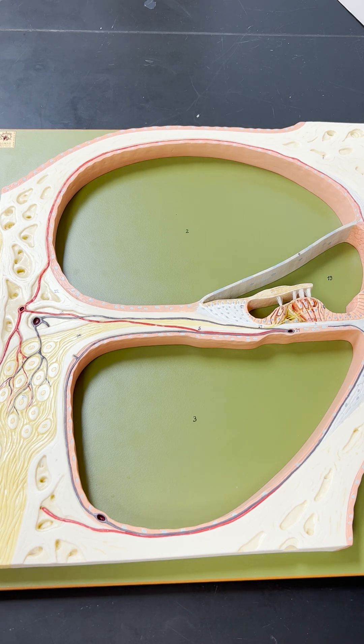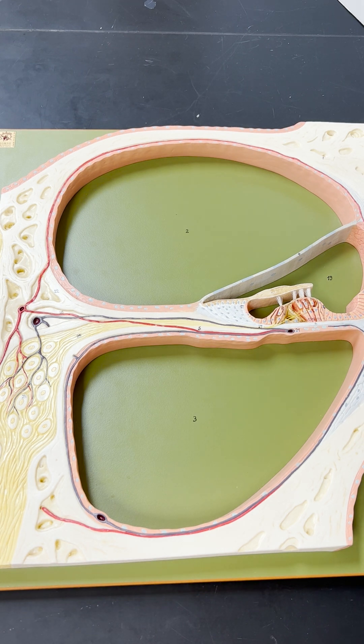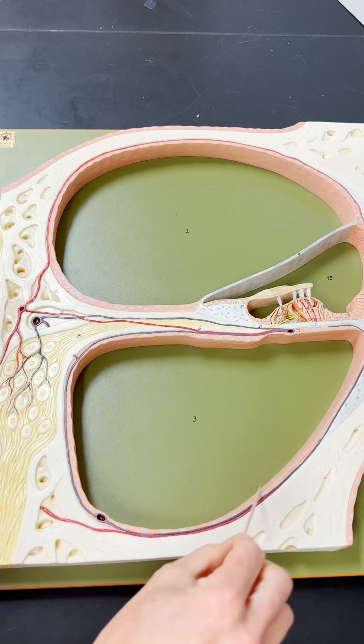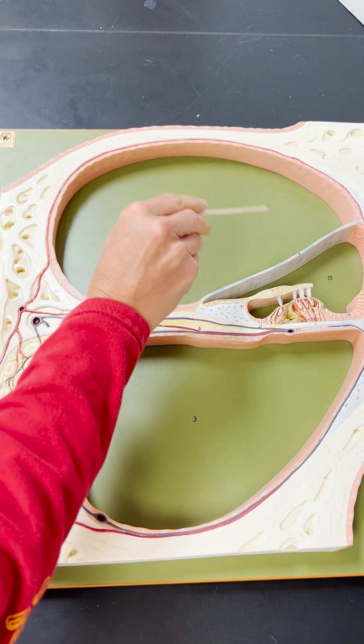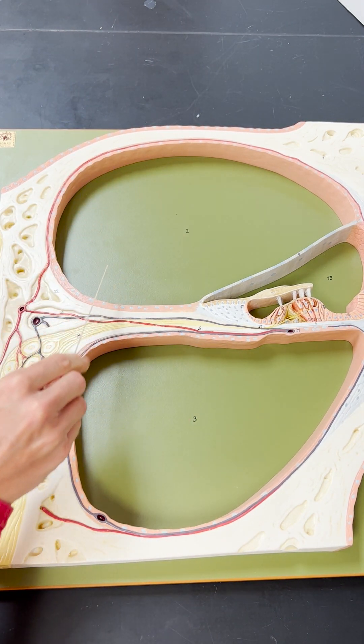The cochlea represents a bony labyrinth or a maze of channels on the inside, and it is lined with a membrane, the membranous labyrinth. The membranous labyrinth actually separates the one single space into three chambers.